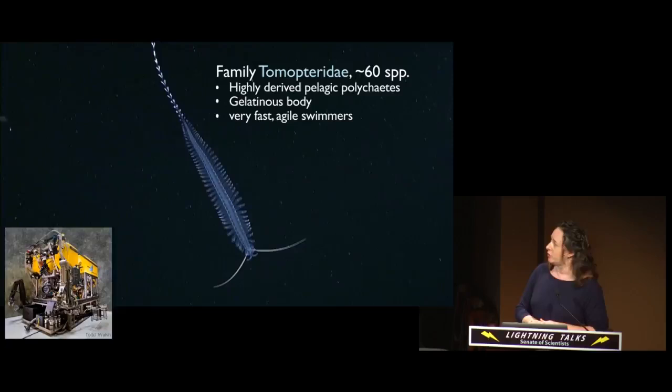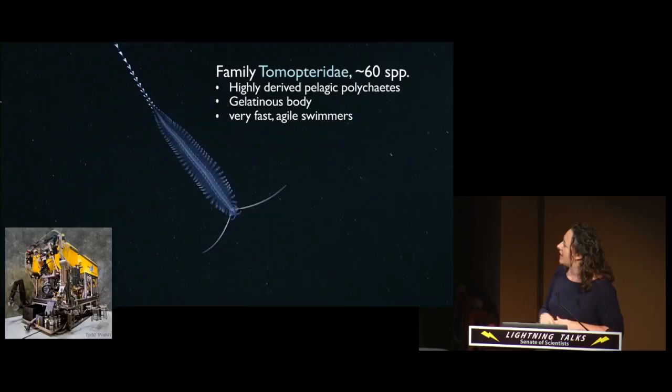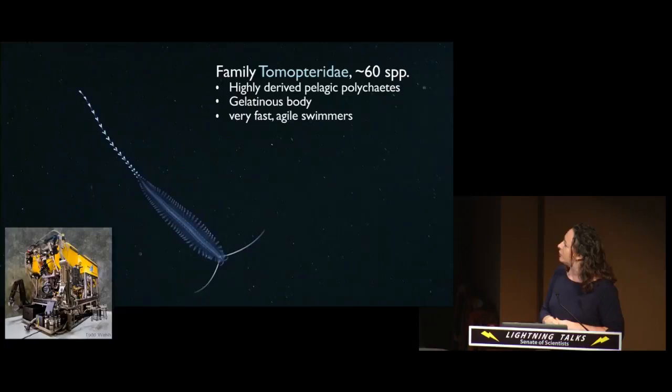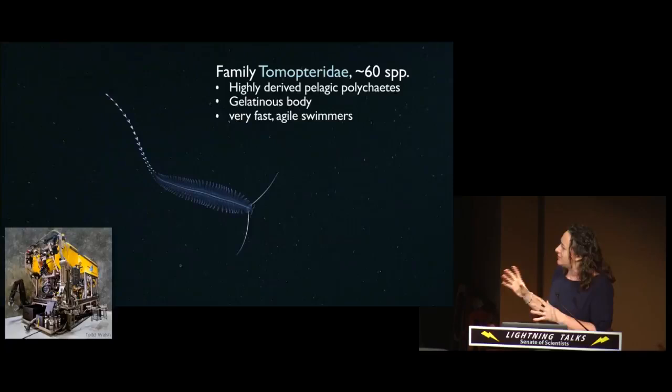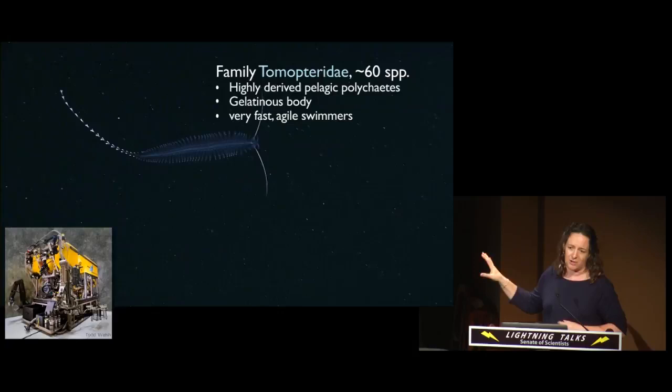They are absolutely beautiful, highly derived. They're not like any other polychaete worms out there. They have a completely gelatinous body. They don't have any of the bristles that polychaetes are supposed to have — that they're named for. They're incredibly fast, agile swimmers. These are like the superstars or the speedsters of the midwater as far as swimming is concerned for polychaetes.